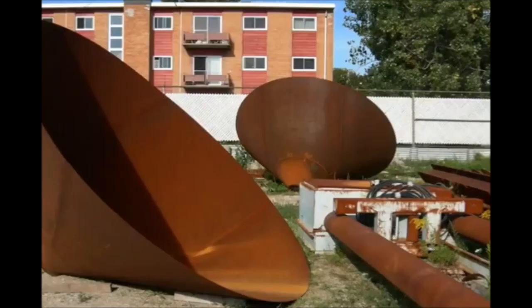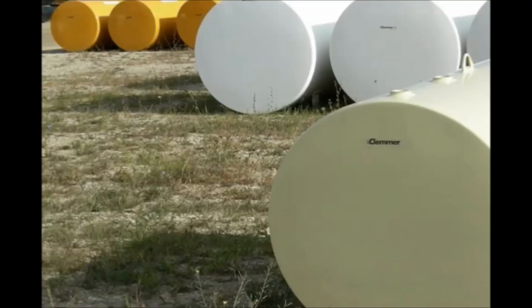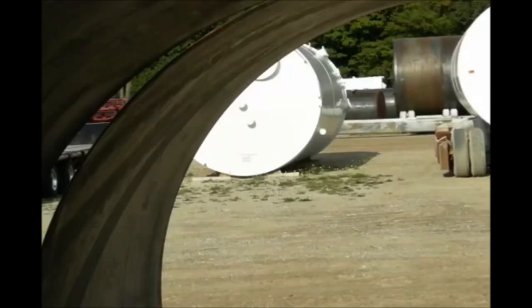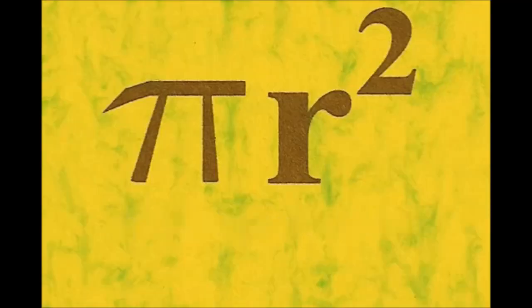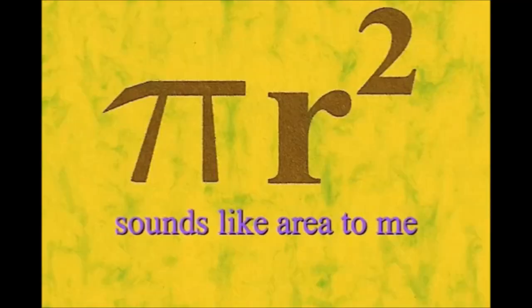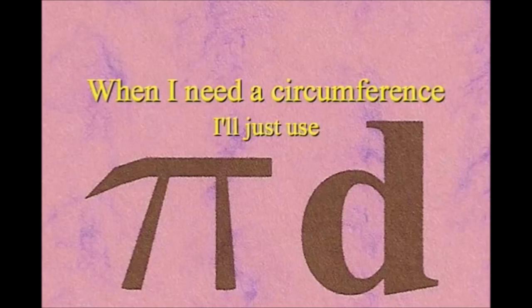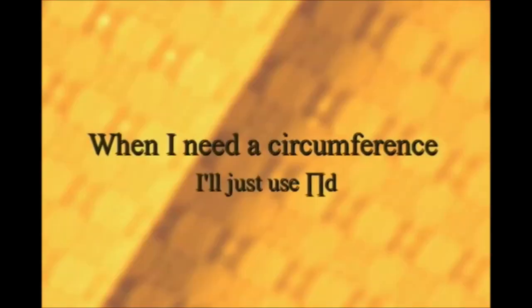It has a radius from center to rim. And its diameter's a line that goes from side to side while passing through the center, now isn't that simple. Pi r squared sounds like area to me, when I need a circumference, I'll just use pi d.